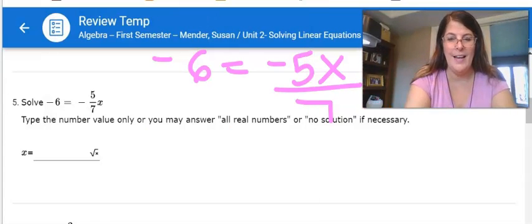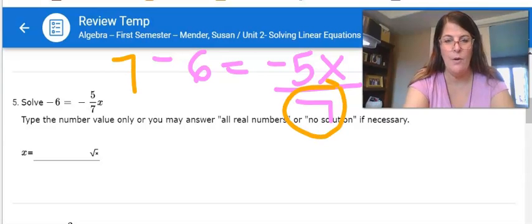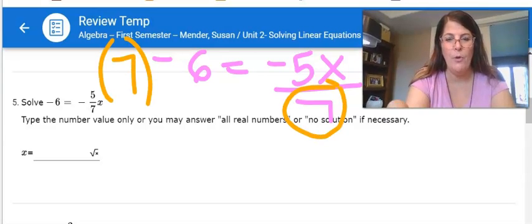Now I look at this and I see this fraction. This is what makes me stressed out. I don't like that, so I'm going to multiply both sides by whatever is in that denominator.